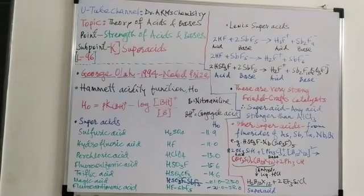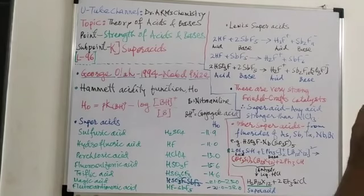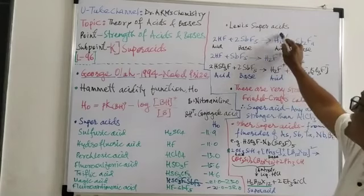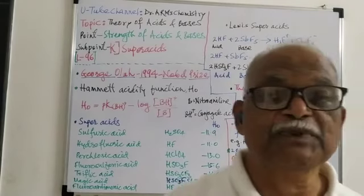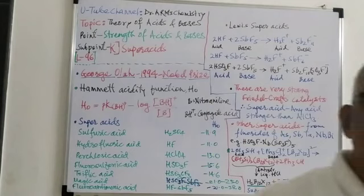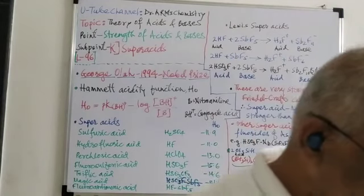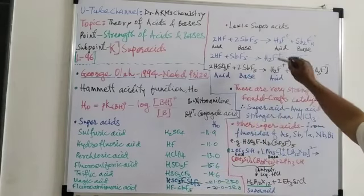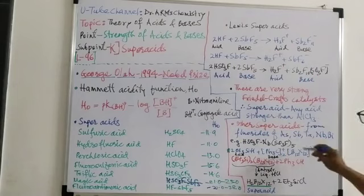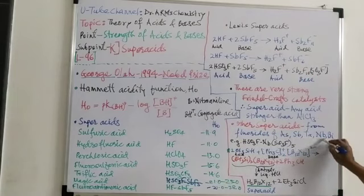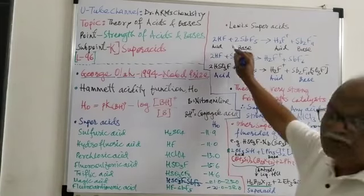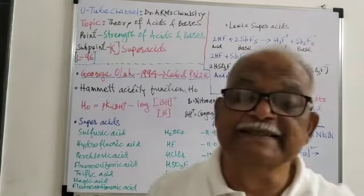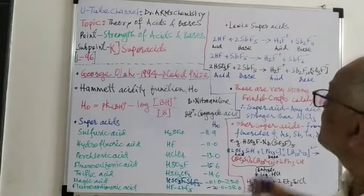If we see the Lewis super acids, these are obtained from the fluorides of various elements such as antimony, tantalum, niobium, bismuth, etc. So how are these acids formed? We can see some reactions, examples of these reactions.